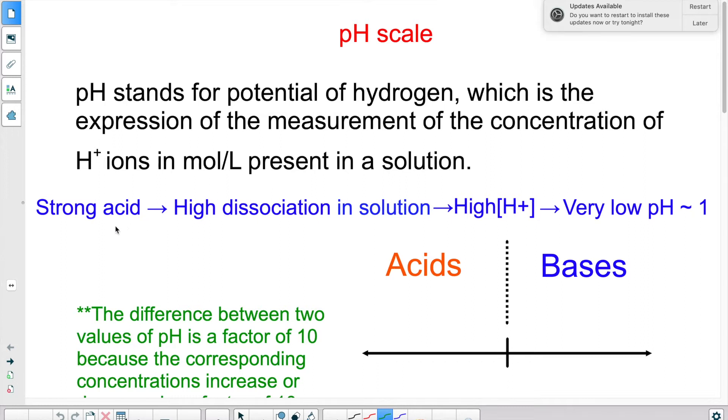Now we've said that before, if something is a strong acid, there is a high dissociation. So there's a high production of H plus ions. These square brackets mean concentration. And if there's a lot of H plus ions, we will say that the solution has a very low pH or closer to 1.